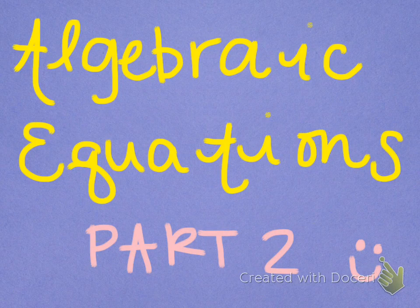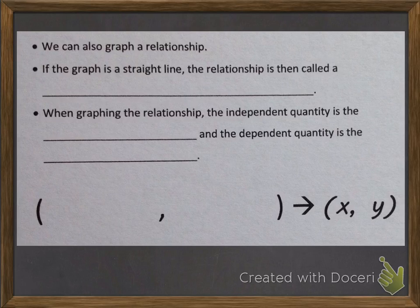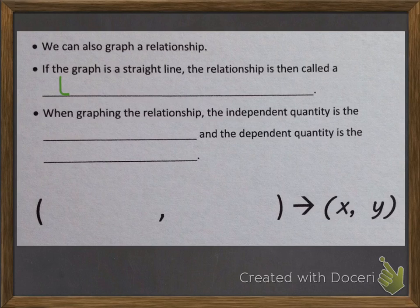Algebraic Equations, Part 2. We can also graph a relationship. If the graph is a straight line, the relationship is then called a linear relationship.